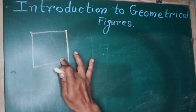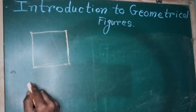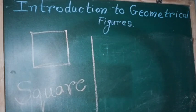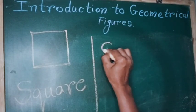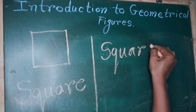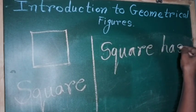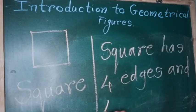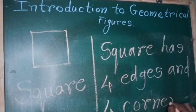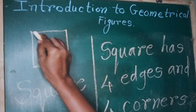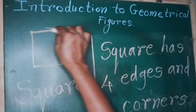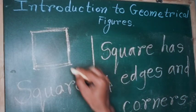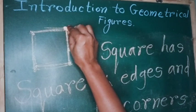Square — the spelling of square is s-q-u-a-r-e. Square has four edges and four corners — one, two, three, four.